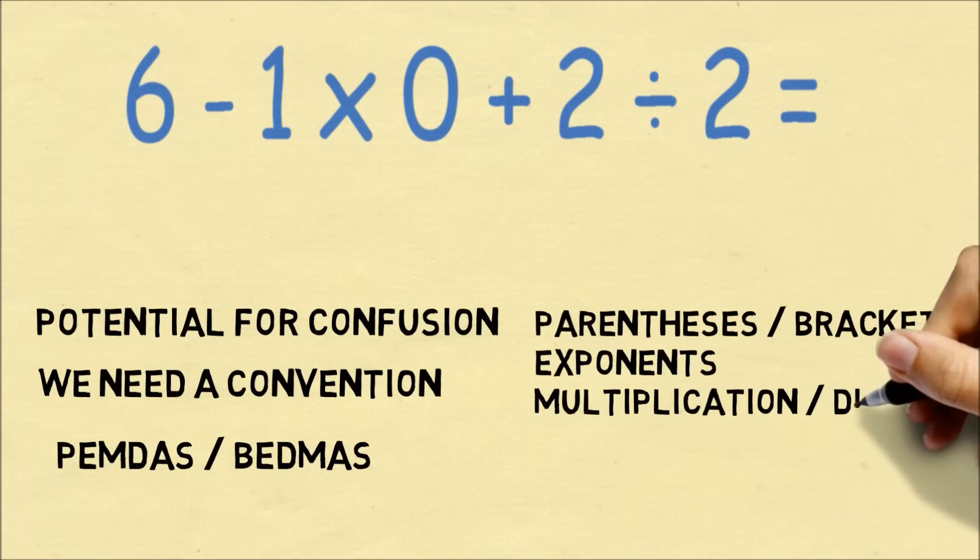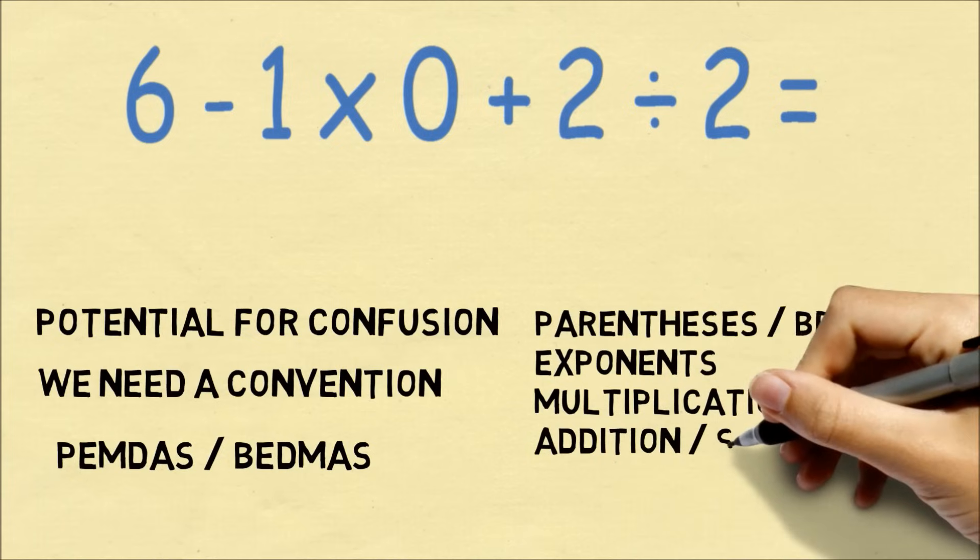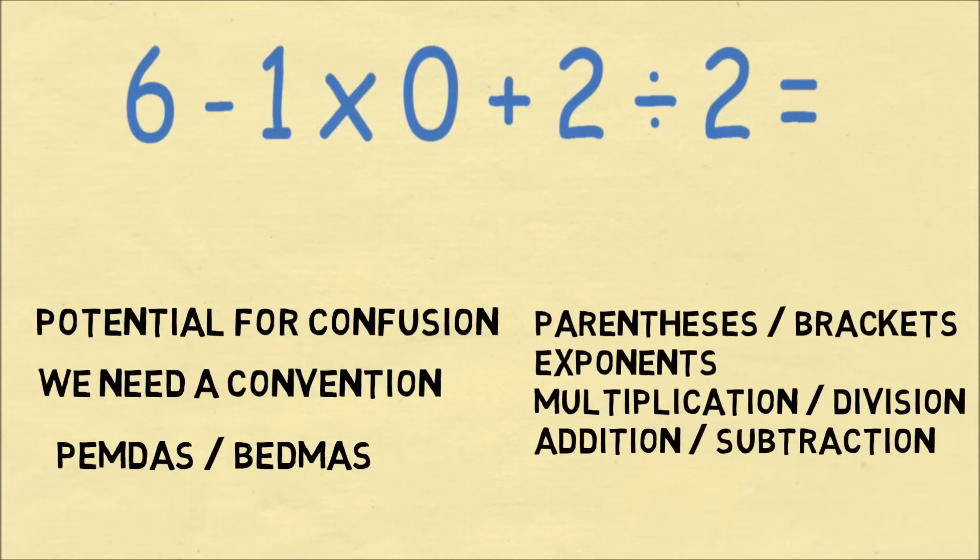So we look at the things that are in parentheses or brackets first, then exponents, then we look at multiplication and division, and finally addition and subtraction. And otherwise, we go from left to right.